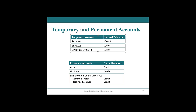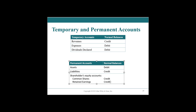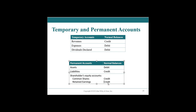That credit to retained earnings is how we articulate the net income less dividends from our temporary accounts through to retained earnings, which typically carries a credit balance. So retained earnings has captured the income earned minus dividends paid out — in this case $3. Your assets and liabilities already went up and down through our general and adjusting journal entries, and this is how we reflect a running total of how the company is doing.